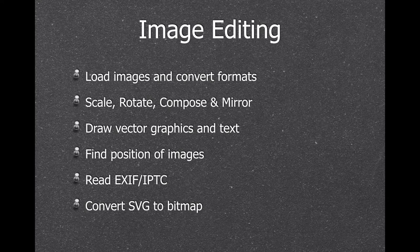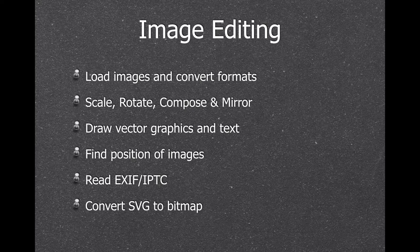The MBS plugin comes with a lot of GraphicsMagick functions for image editing. We can load images and convert them to other formats, scale pictures, rotate them, compose pictures by placing one picture on another, and mirror them if needed. We can draw vector graphics and text on top of a picture, find positioning in images so you know where a certain line starts, read metadata from pictures, and convert vector graphics to bitmap.